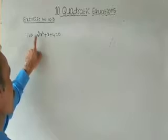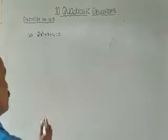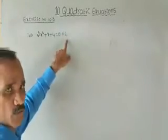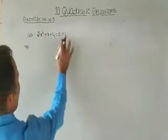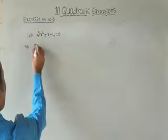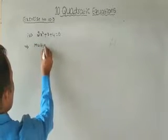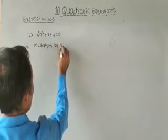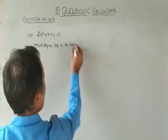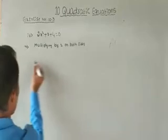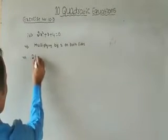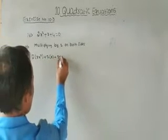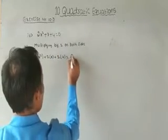First, convert the coefficient of x² to a perfect square by multiplying by 2. Multiplying by 2 on both sides: 2·(2x²) + 2·x + 2·4 = 2·0, which gives 4x² + 2x + 8 = 0.